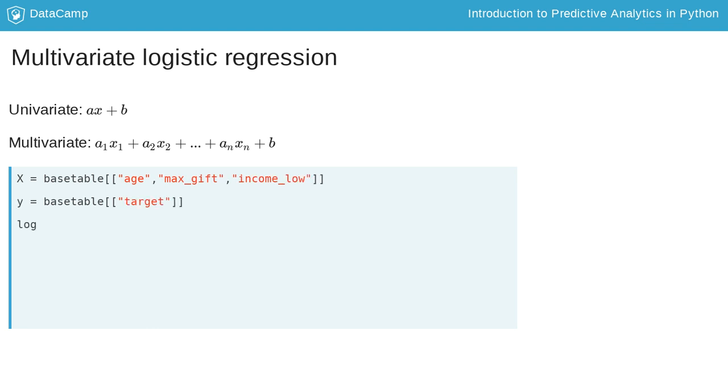In Python, nothing changes, apart from the fact that you now need to select multiple variables in the X object. If you output the coefficients, you see that for each predictor used, a coefficient is calculated.